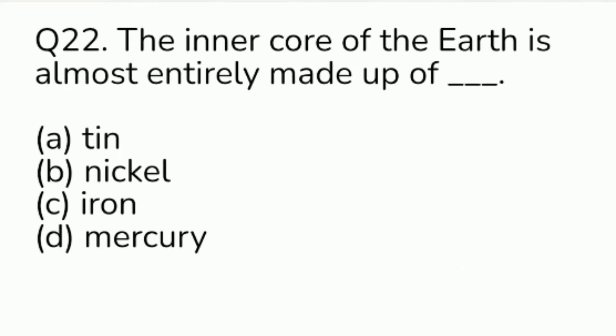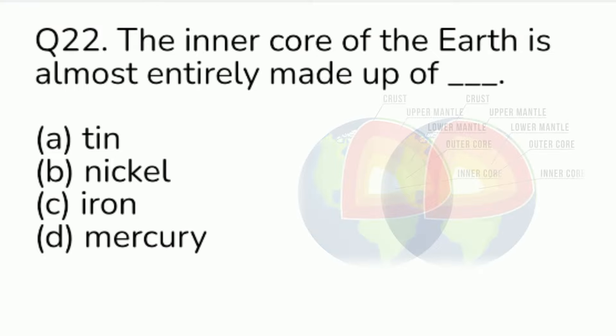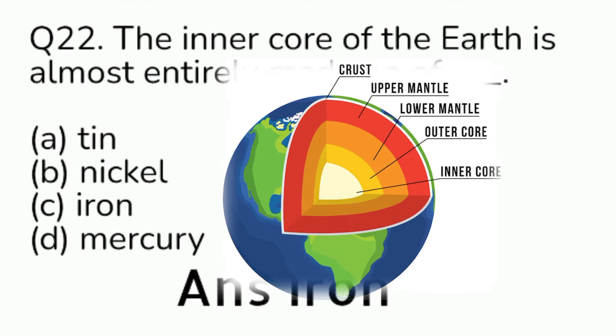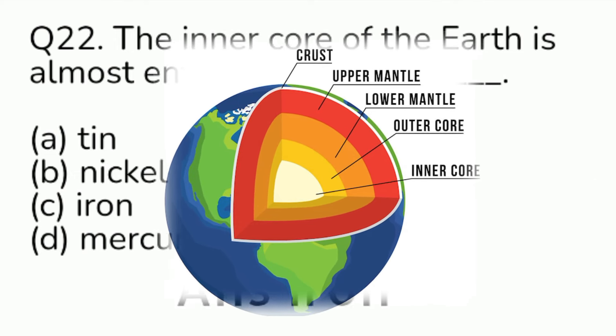Question number 22. The inner core of the Earth is almost entirely made up of — Option A: tin. Option B: nickel. Option C: iron. Option D: mercury. Answer is Option C, iron.